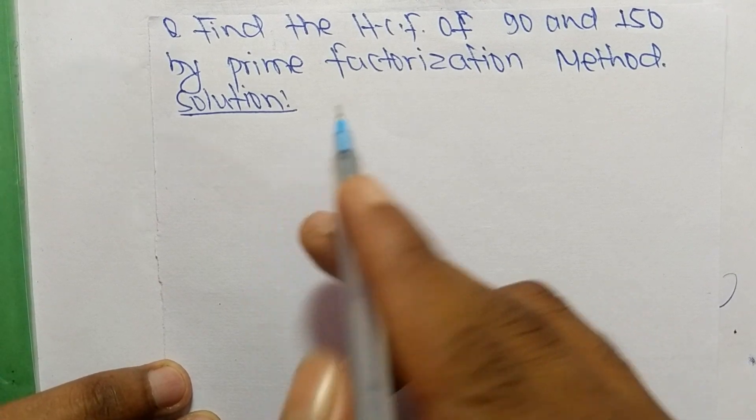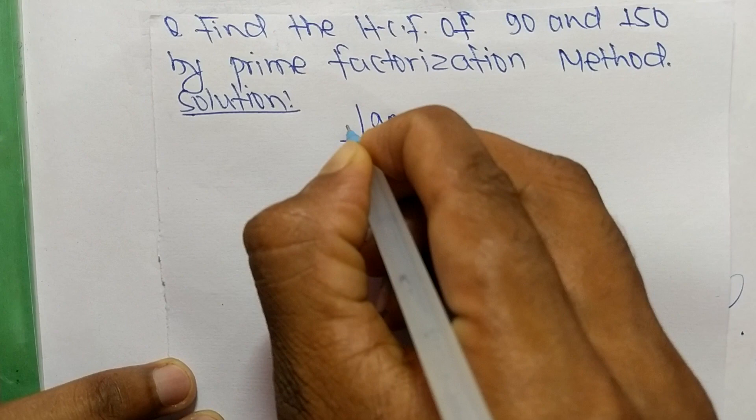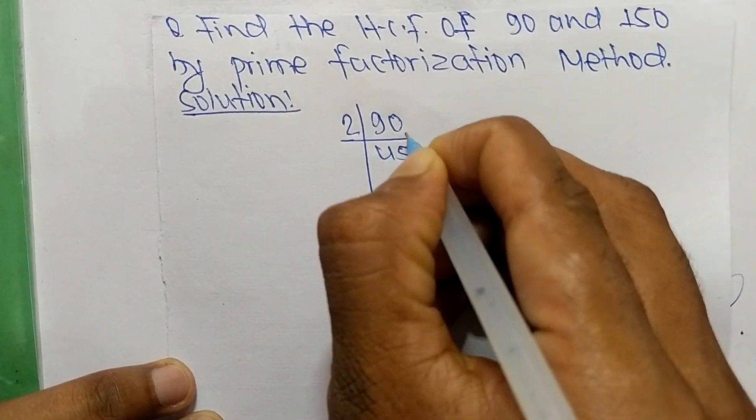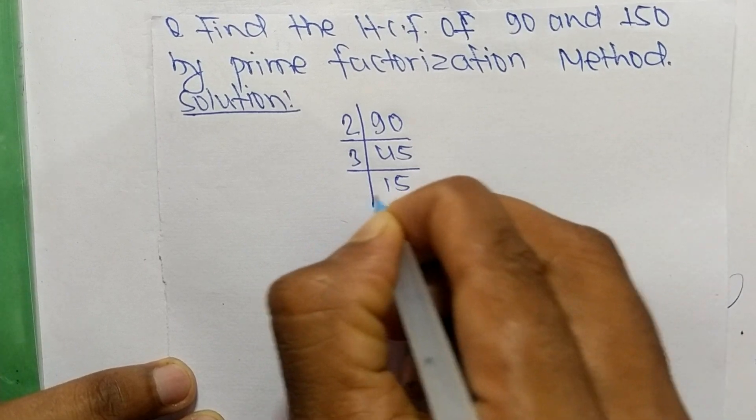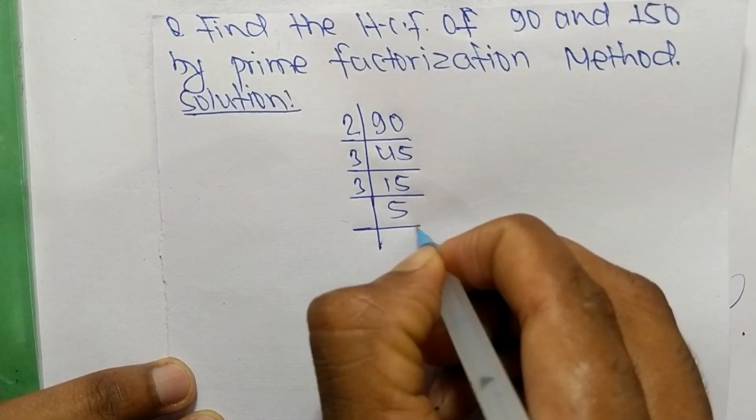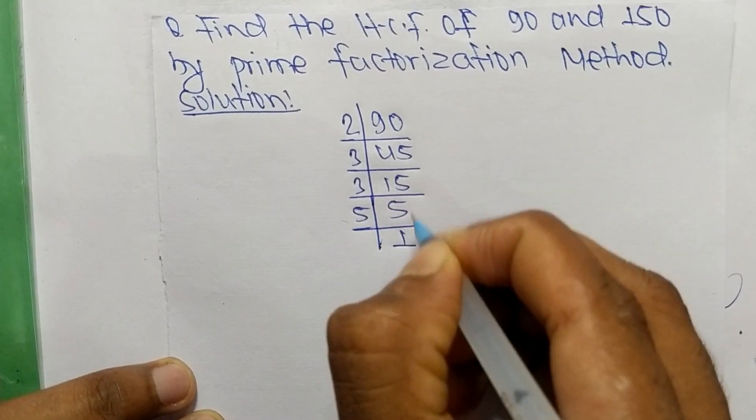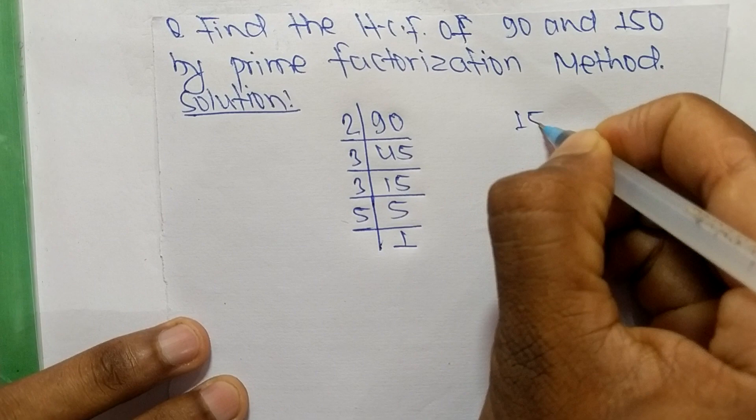First we find out the prime factors of 90. So it is 2 times 45 means 90, 3 times 15 means 45, 3 times 5 means 15, and 5 times 1 means 5.